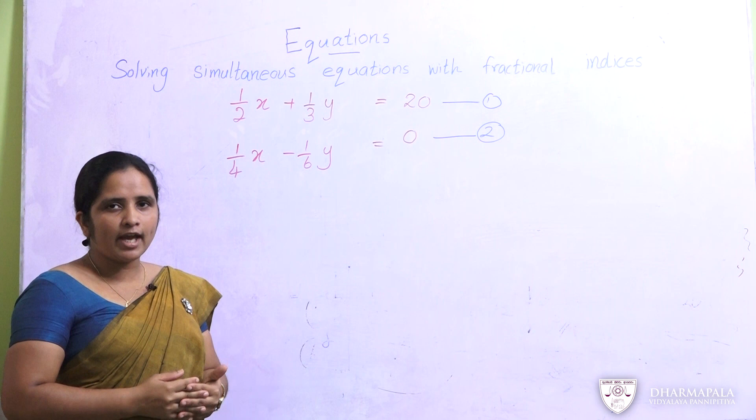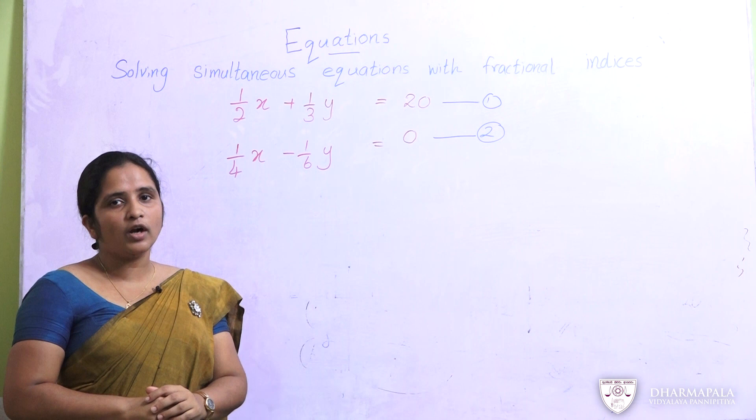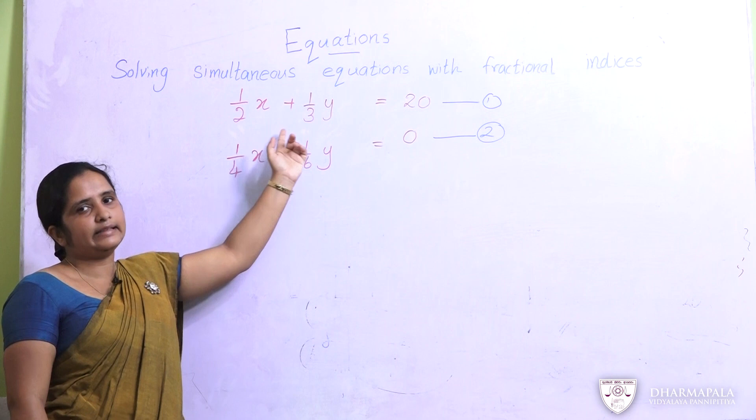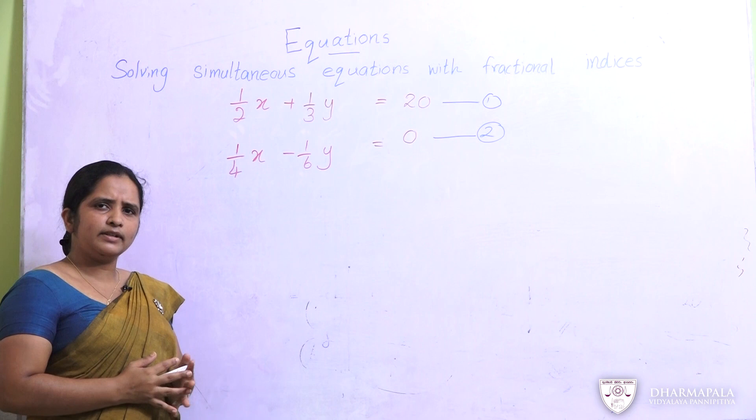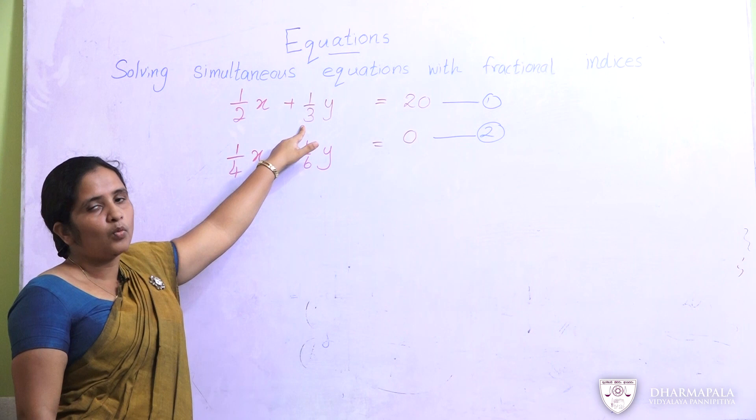We know that when we have whole numbers as coefficients we know how to solve simultaneous equations — we have to make the coefficients equal. Here also the same way. There are three ways to do this, and today I am going to teach you all three ways. The first way is we can omit these denominators by taking the LCM of both denominators and multiplying each and every term by that LCM.